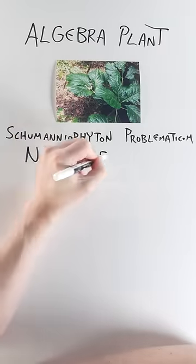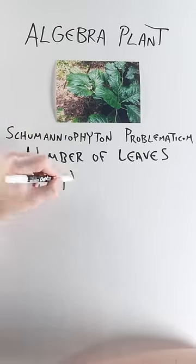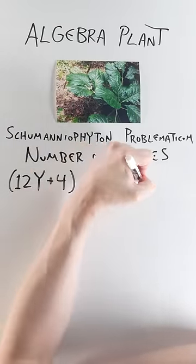The number of leaves is determined by the function 12Y plus 4, where Y is the age of the plant in years.